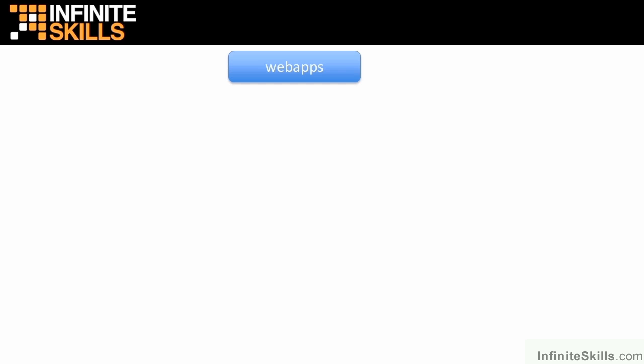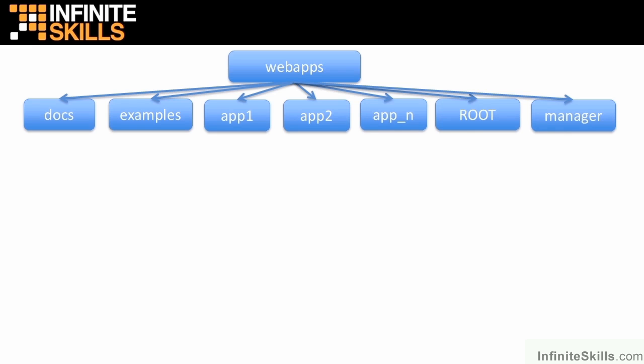First, we have to go into our Tomcat root directory and find the webapps folder — that's where all of the web applications are going to live. If you included docs, examples, and root manager during installation, you should have those folders in your webapps. If you didn't, they won't be there, and that's not a big deal — we don't really need them for this course. You should have a root folder, which is where the default application lives that you see when you browse to localhost. Every application we add, we're going to put in there — app one, app two, city manager, hello world servlet, et cetera.